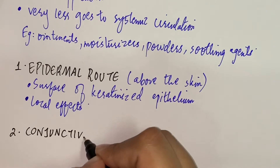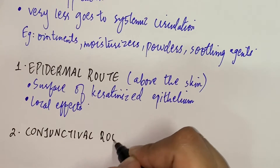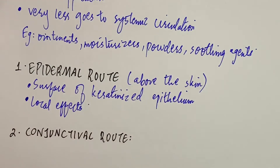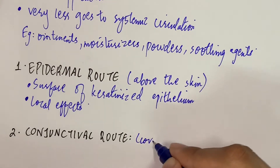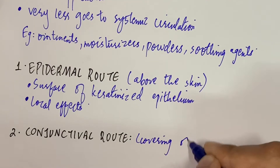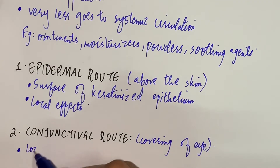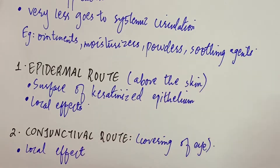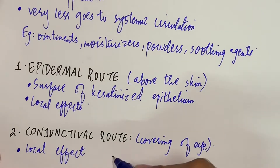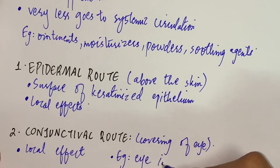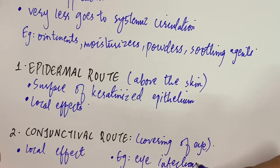The second type is the conjunctival route — the covering of the eye. When we put in eye drops for an eye infection, that is the conjunctival route. It gives local effects through the conjunctiva. Examples include eye infections and allergies.